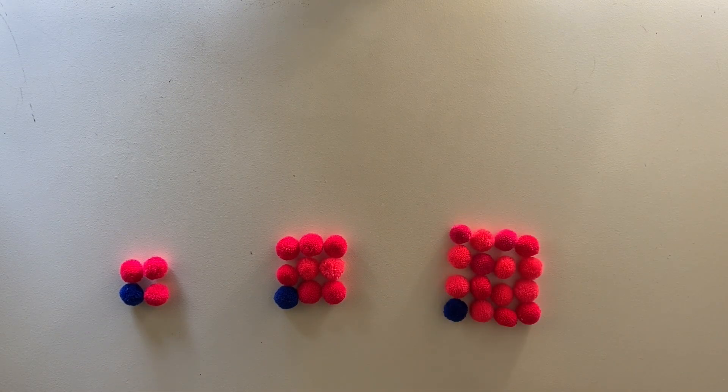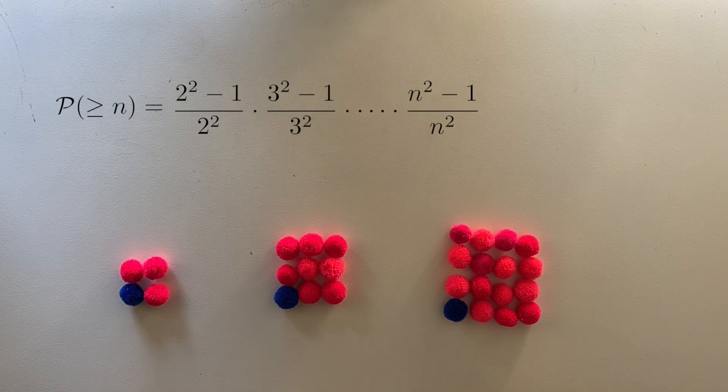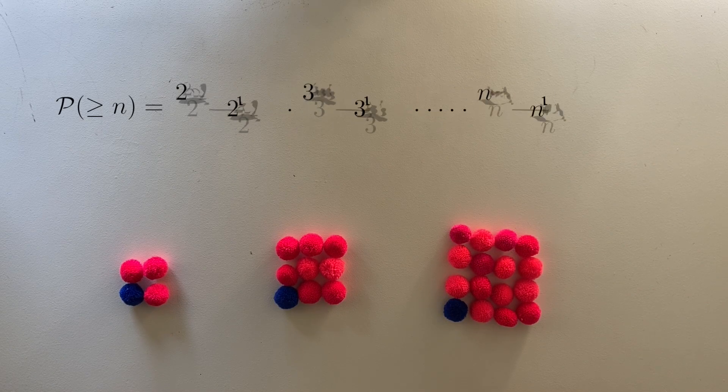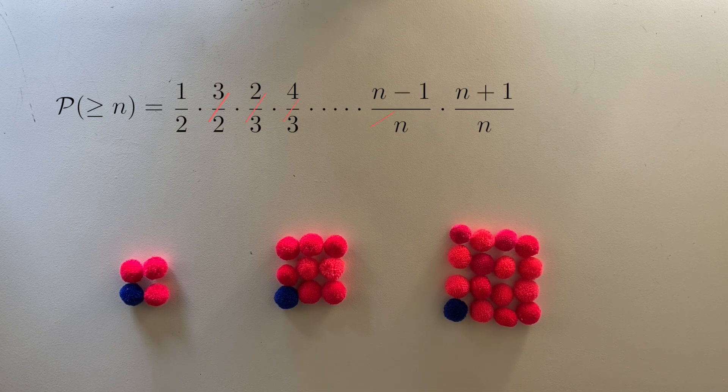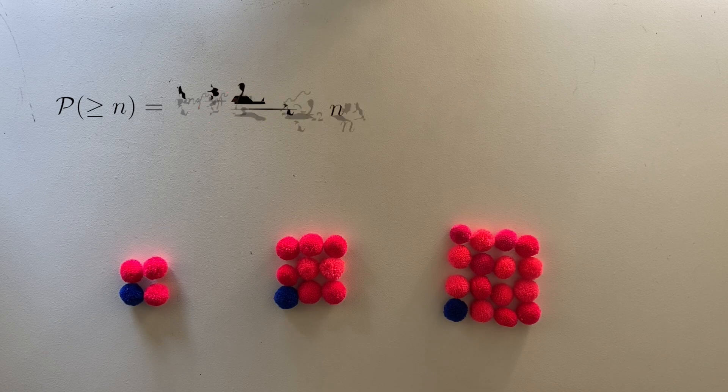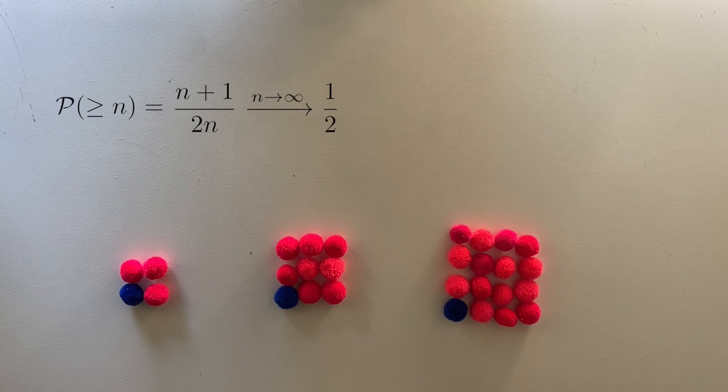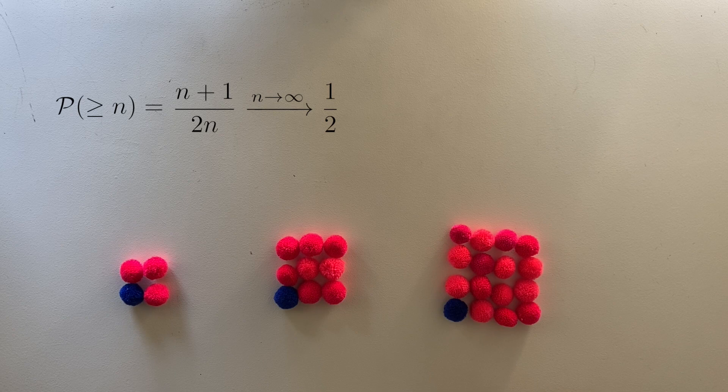The probability we draw only red balls up to round N is 3 and 4 times 8 and 9 times 15 and 16, and so on up to N squared minus 1 over N squared. If we do some very clever factorization, we can cancel some things and get a probability of N plus 1 over 2N. As N approaches infinity, this approaches one half. That means that in this game, there's a 50% chance that we just keep drawing red balls forever.